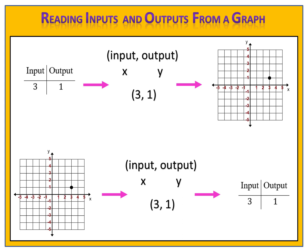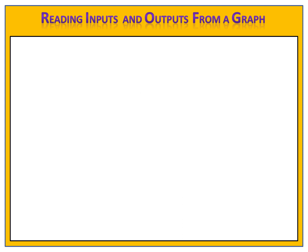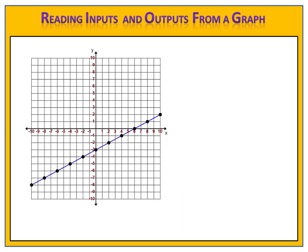Today we're going to look at examples where we start with a graph and we complete the input and output table. Let's take a look at some examples. In this example we have a line, and on that line are many points. Each point represents an input and an output. Let's use the graph to complete an input and output table.